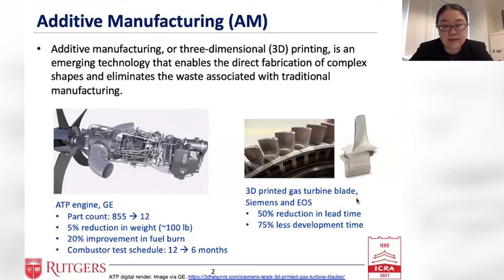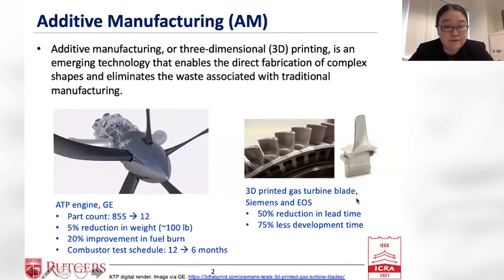This in turn has reduced the mass of the engine by around 100 pounds, improved the fuel burn by about 20%, reduced the test schedule from 12 to 6 months, and made the engine maintenance much simpler. Another successful case shown to the right is the 3D printed gas turbine blade. The use of AM led to 50% reduction in lead time and 75% less development time.